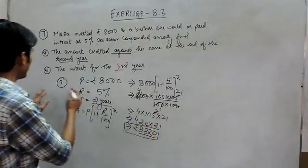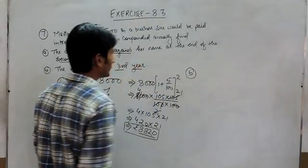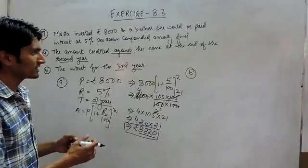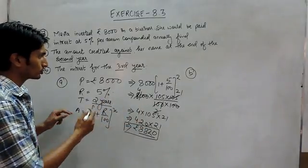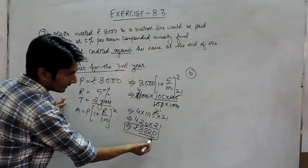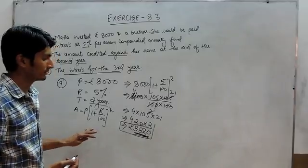And in the second part, we have to find the interest for the third year. We know that in compound interest, the amount every year will act as principal for the next year. So if you want to find the interest for the third year, we know that this amount will act as principal for the third year.